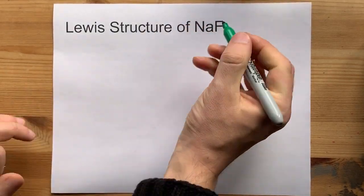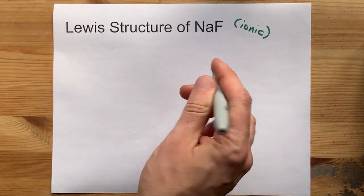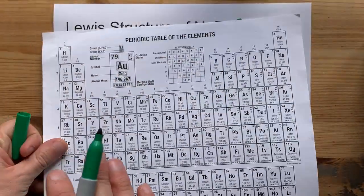Metal and non-metal will combine to form an ionic compound. That means there's a transfer of electrons from one to the other.